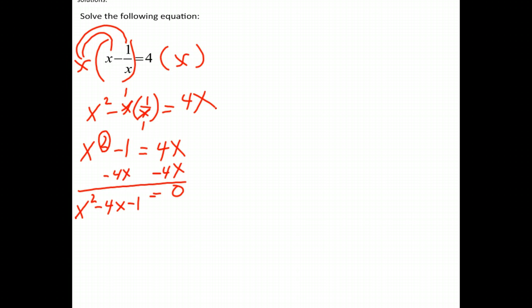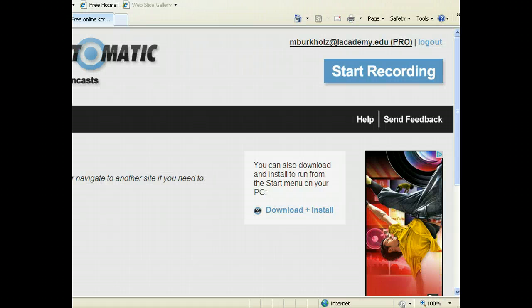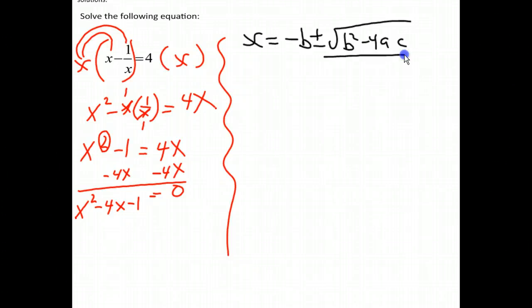And now we need to use the quadratic formula or to factor this equation. Most of you will realize you cannot factor this. But if you're not sure, using the quadratic formula certainly works. So let's rewrite the quadratic formula so we have that. If you might remember, x is always equal to negative b plus or minus the square root of b squared minus 4ac, over 2a.